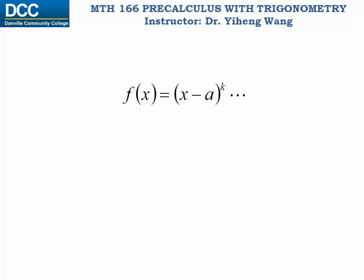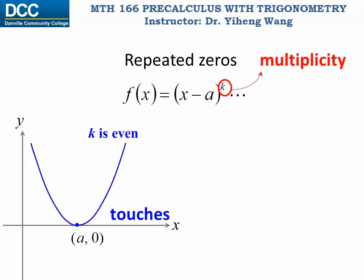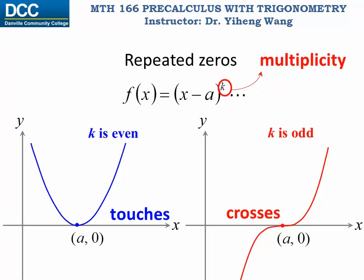If the polynomial function has a factor (x - a) to the k-th power, then a is known as a repeated zero and k is the multiplicity — indicating how many times that factor is repeated. If k is an even number, the graph will touch the x-axis at that zero but will not cross it. If k is an odd number, the graph will cross the x-axis at that intercept.